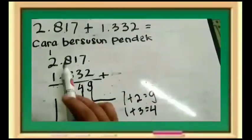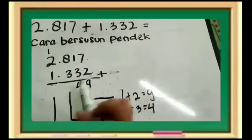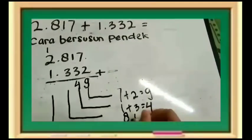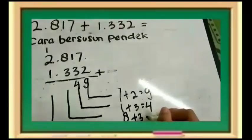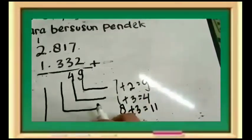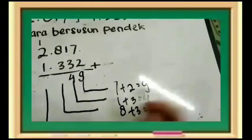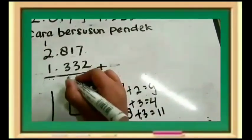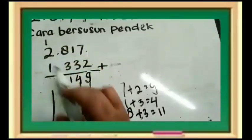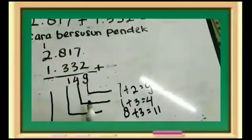Kemudian, delapan ditambah 3. Delapan ditambah 3 sama dengan sebelas. Bagaimana cara menyimpannya? Kita simpan satu di sini. Satu di atas. Kita punya simpanan satu di atas.